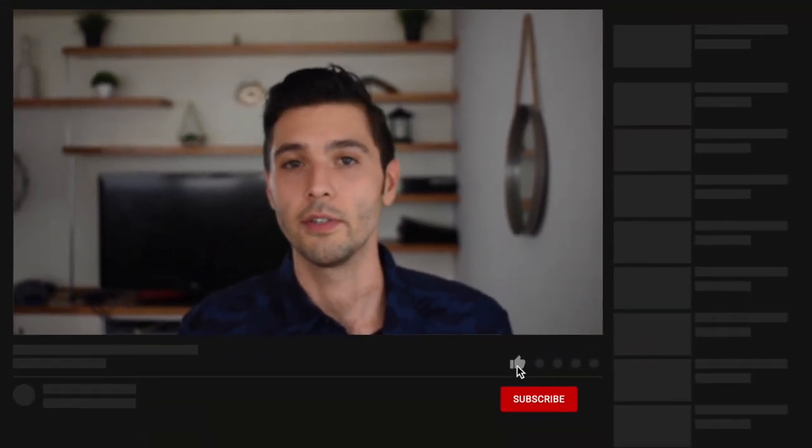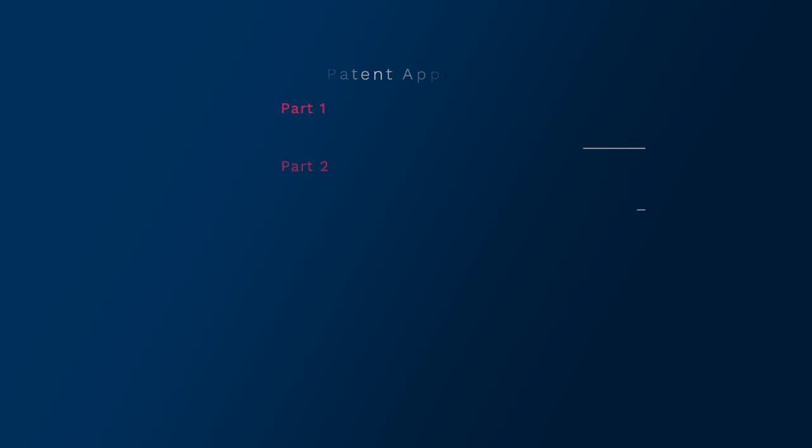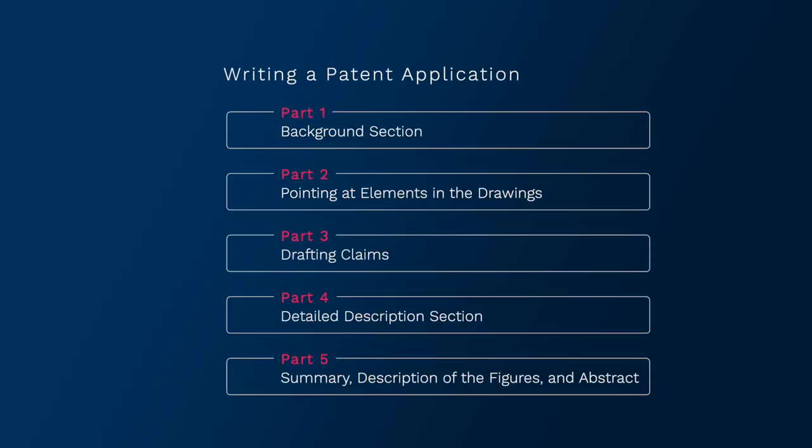Hi guys, this is part one of a video series that shows my formula for writing patent applications as a patent engineer. This formula works for both non-provisional and provisional patent applications. This will be a five-part video series, so make sure you subscribe and hit the bell so that you are updated whenever the videos are released. This is part one, which will be about the background section.